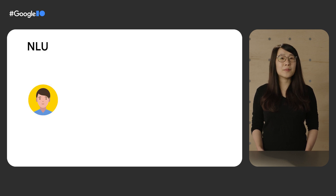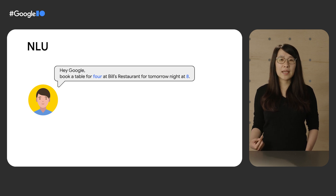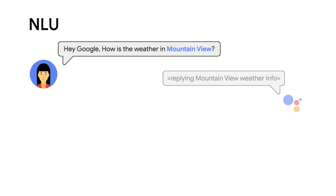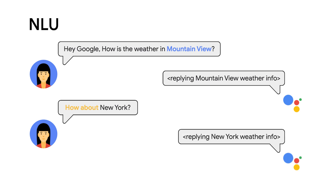Let's look at another example of natural language understanding. A user might ask Assistant to book a table for 4 at Bill's restaurant for tomorrow night at 8. There are two numbers in the query — 4 and 8 — and the Assistant NLU is able to understand that 4 means 4 people, and tomorrow night at 8 is a specific date and time. Assistant NLU also takes context into consideration. For example, if a user asks 'How is the weather in Mountain View?' and then follows up with 'How about New York?' — even though the second query doesn't mention weather — Assistant understands from context that the user is still asking about weather and responds correctly.